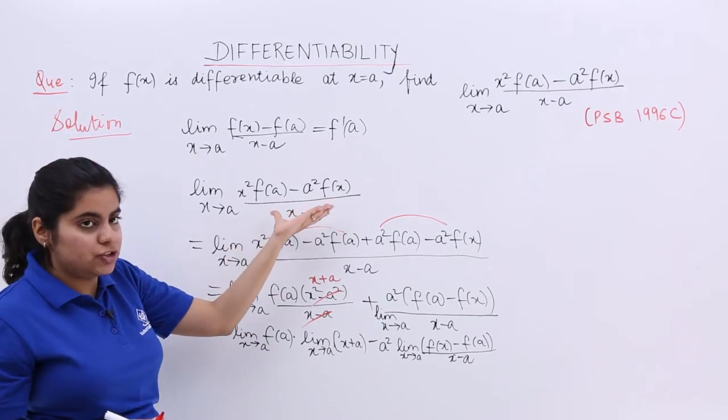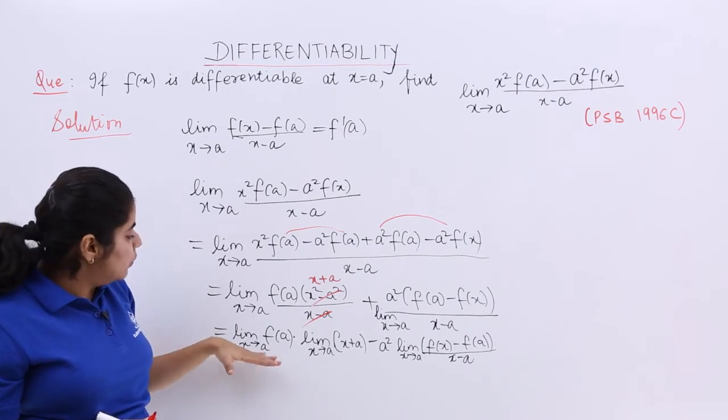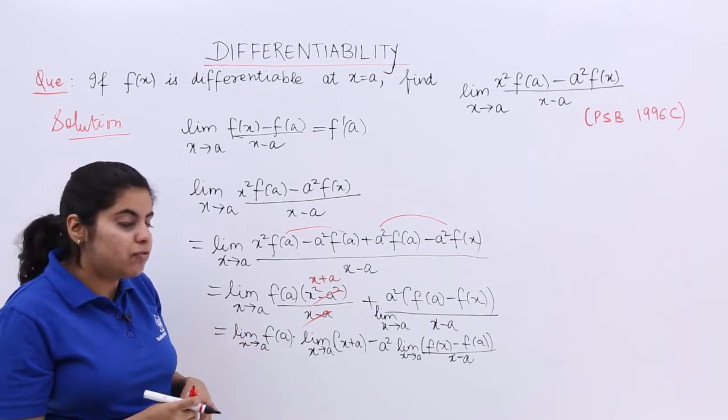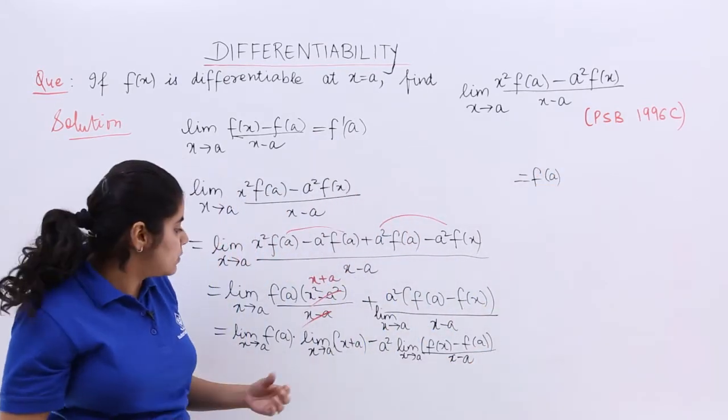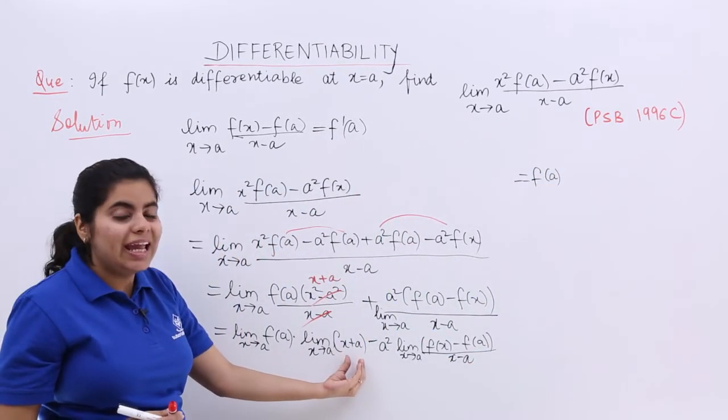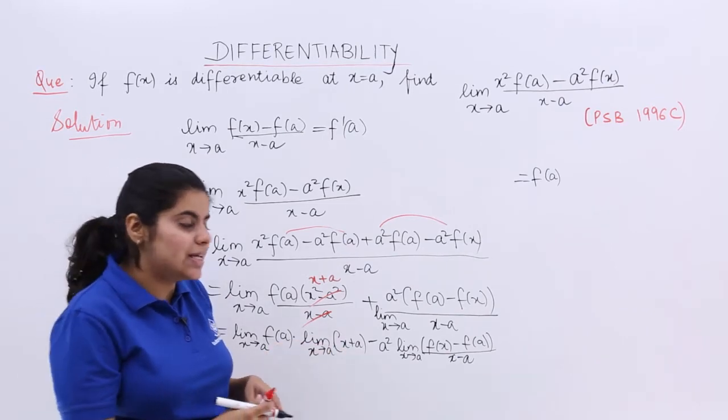Now we have reached some level. We started with this expression and we had to attain a value. The value limit x tends to a of f(a) is nothing but f(a) only. Next, limit x tends to a of (x + a). Put the value by direct substitution: a + a gives me 2a.